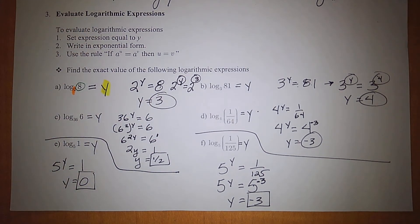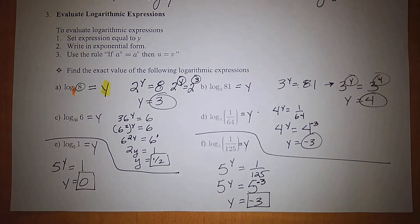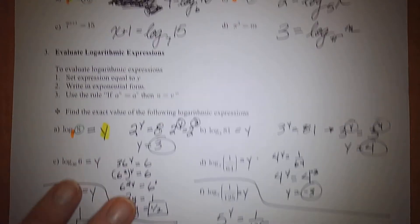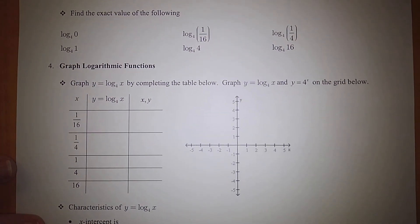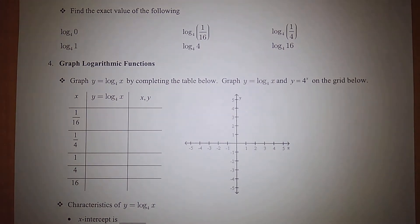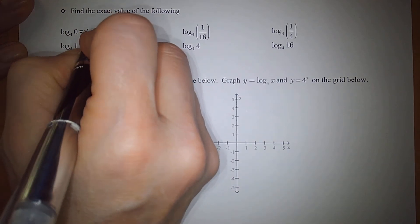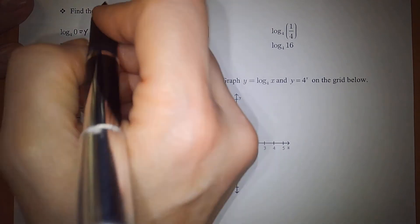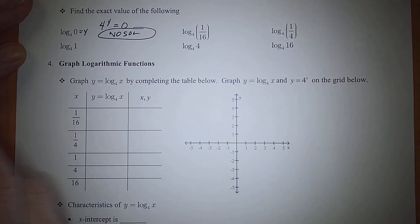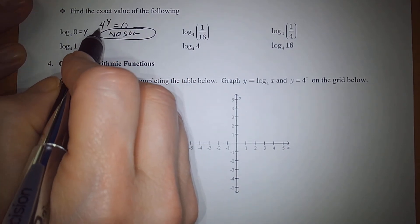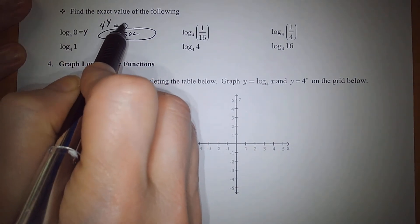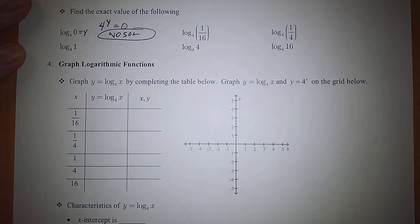We're able to solve logarithms that have integers as answers. However, sometimes it's more difficult when answers are decimals, and we'll need other methods for those. For example, log base 4 of 0: setting equal to y gives 4 to the y equals 0, which is impossible. There is no power you can plug in to turn 4 into 0 — 4 to the 0 power is 1, not 0.